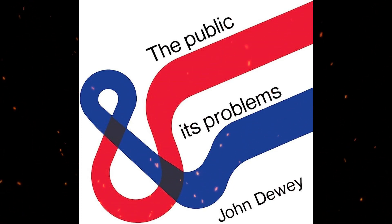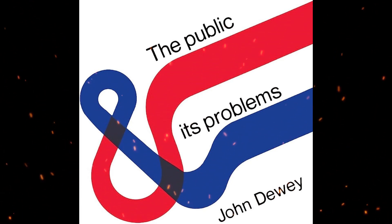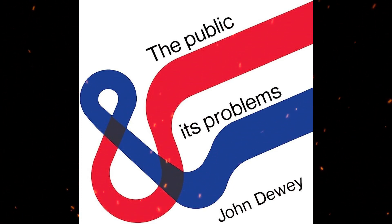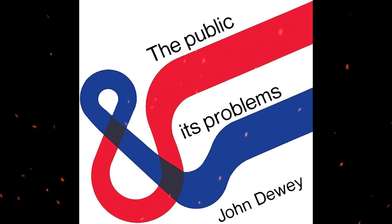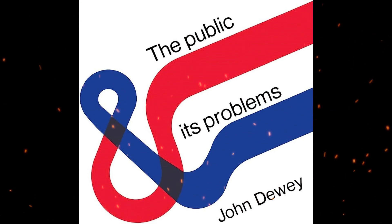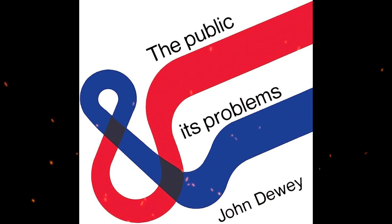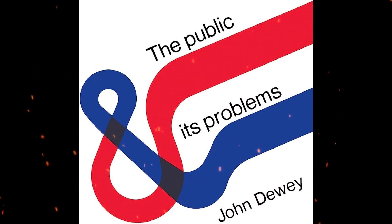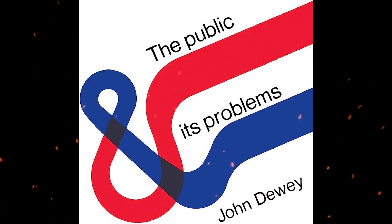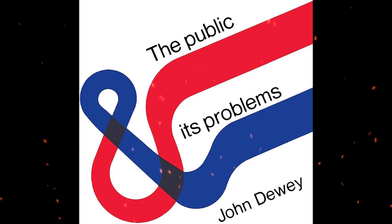The Public and Its Problems, a treatise published in 1927 by renowned philosopher John Dewey, delves into the intricacies of democracy and its relevance in the modern era. While Dewey had previously touched upon political matters, this work stands as his first comprehensive exploration of the subject.